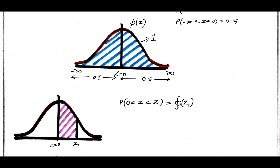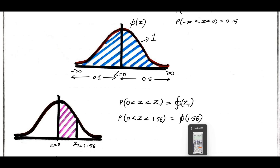I need to find out phi of z1 by using a distribution table. I will take the z1 value as 1.56, meaning I need to find the probability of z lying between 0 to 1.56, that is phi of 1.56. I will now discuss how to find this without any normal distribution table, by using a calculator.